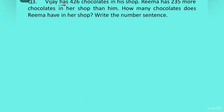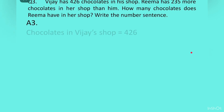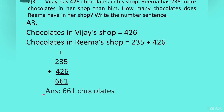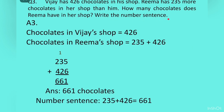Question 3. Vijay has 426 chocolates in his shop. Rima has 235 more chocolates in her shop than him. How many chocolates does Rima have in her shop? Write the number sentence. We write: chocolates in Vijay's shop is equal to 426. Chocolates in Rima's shop is equal to 235 plus 426. Writing one below the other and adding gives 661. Answer: 661 chocolates. The number sentence is: 235 plus 426 is equal to 661.